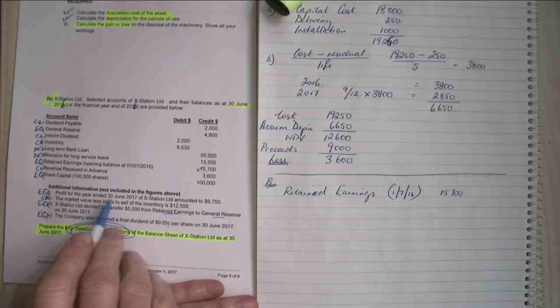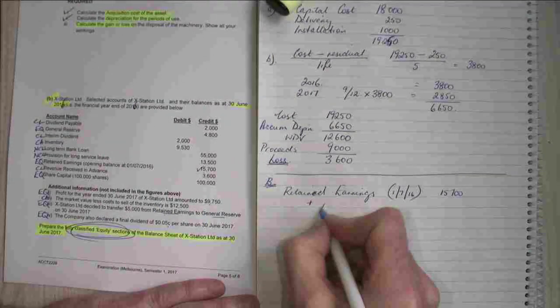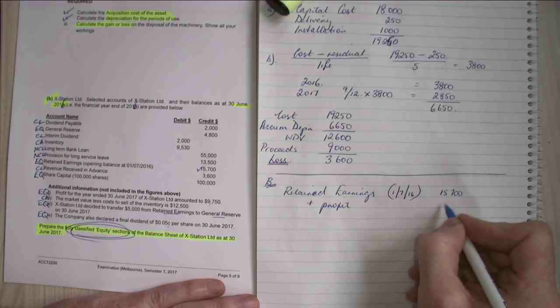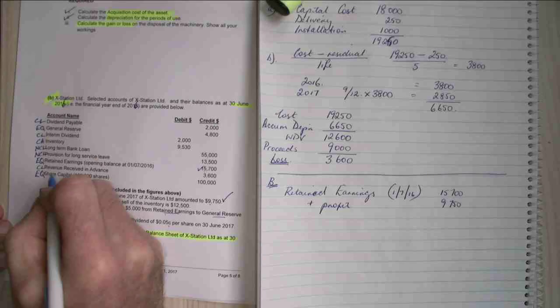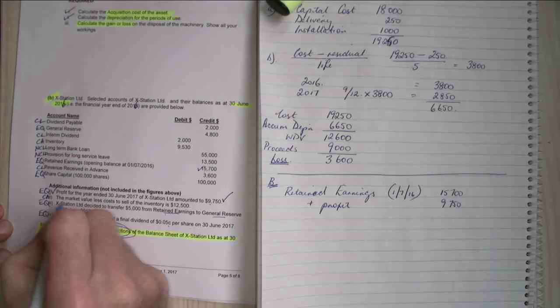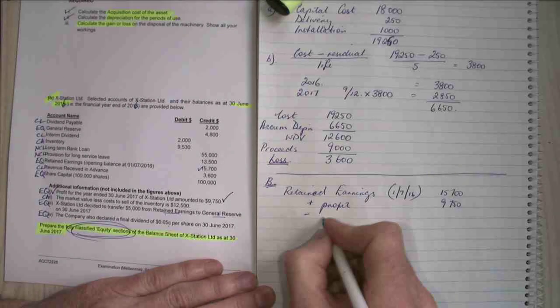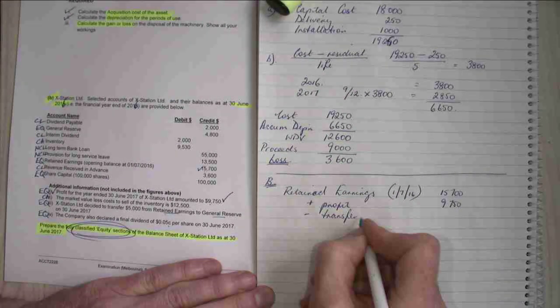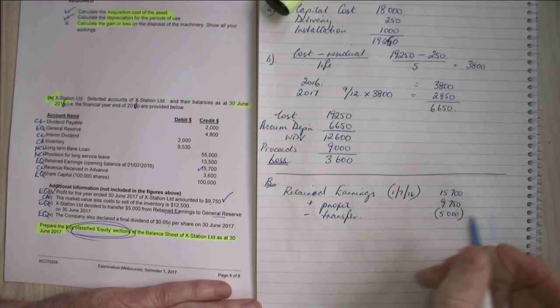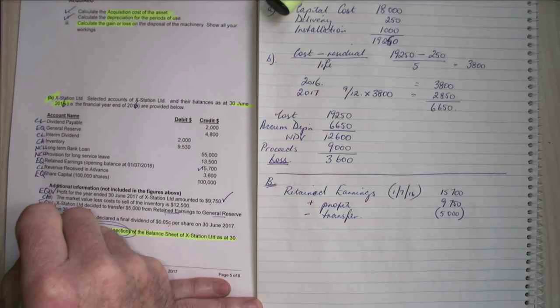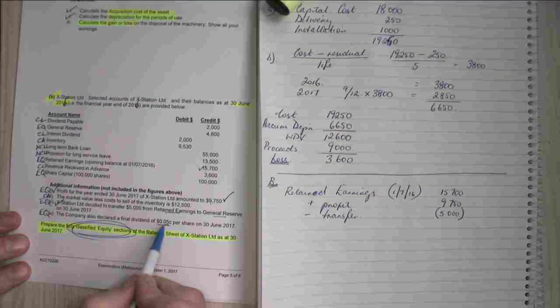Now we're going to add in the profit for the year, which is $9,750. So I'll add my profit, $9,750. So I'll tick that off. X station decided to transfer from retained earnings so we're going to take out a year transfer of $5,000. Now I'm going to bracket the figure to indicate it's less than. And let's tick that off.